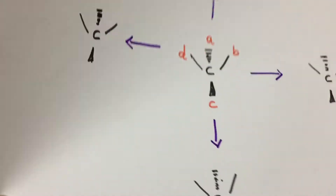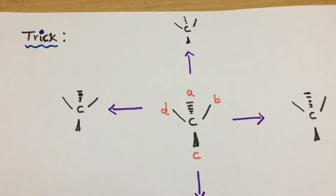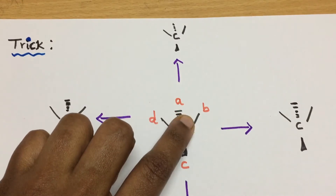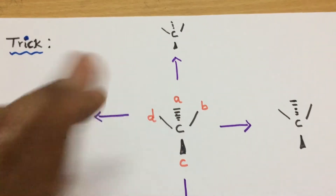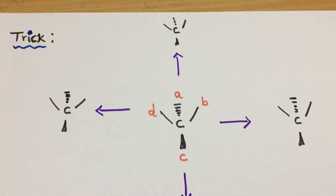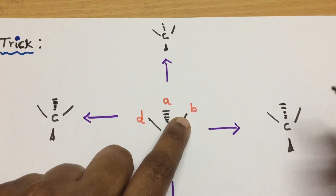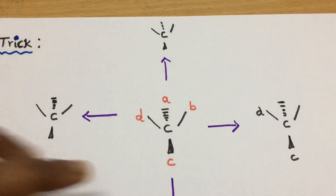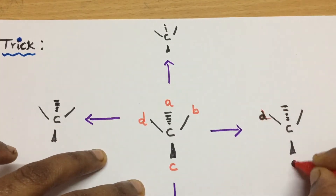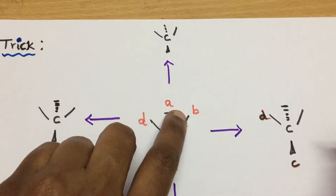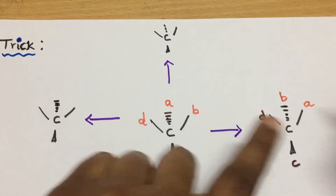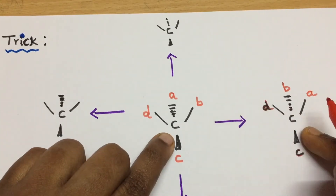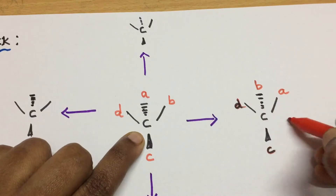So if this is the molecule, here is the trick: take two substituents at a time and shuffle their positions — only one shuffle, only one exchange. Keeping D and C in their positions, I am going to shuffle only A and B. A goes to B's place and B goes to A's place. The relation between these two resulting structures is enantiomer.